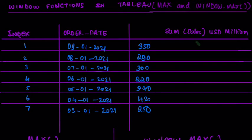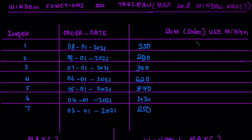Hey guys, welcome to another episode of Analytics About. Today we are going to discuss window functions in Tableau, and in particular we are going to take the example of MAX and WINDOW_MAX in order to demonstrate the difference between a simple aggregate function — for example, maximum, minimum, or average in Tableau — versus a WINDOW_MAX, WINDOW_MIN, WINDOW_AVG, or WINDOW_CORR in Tableau.